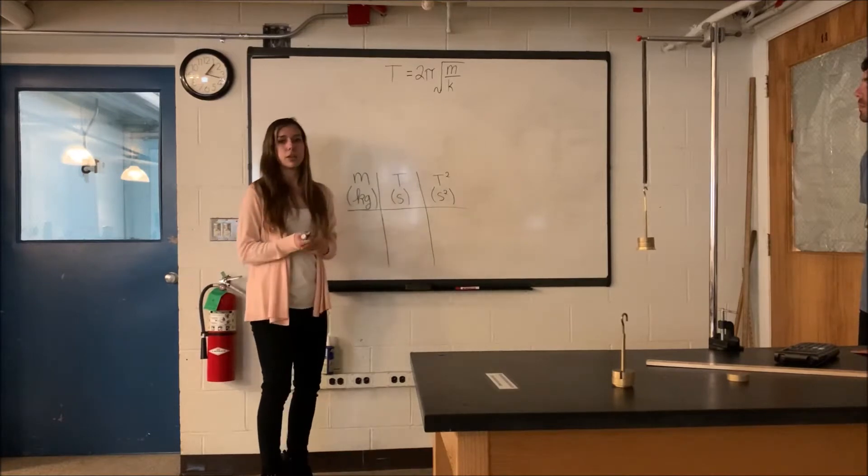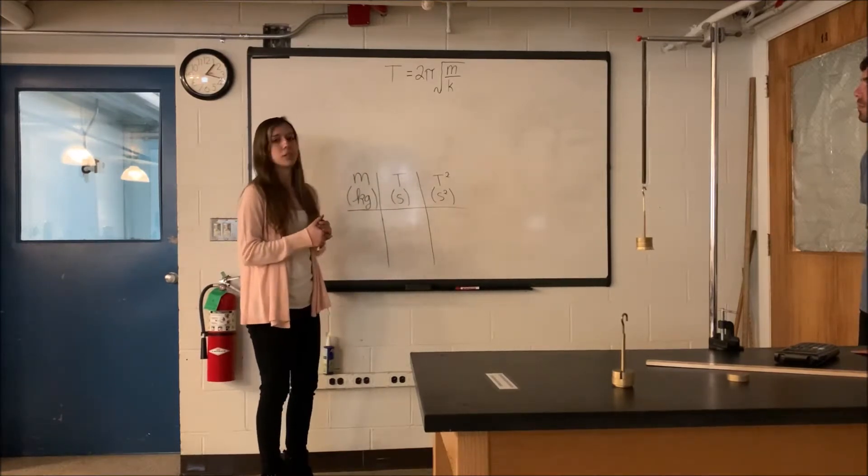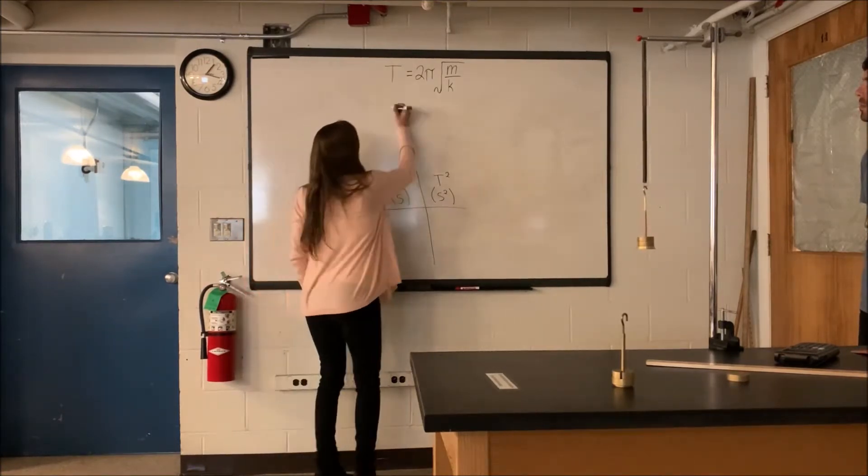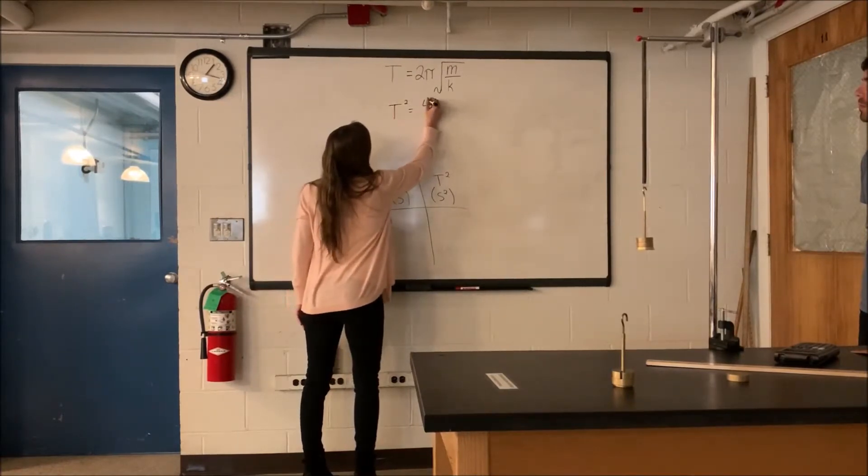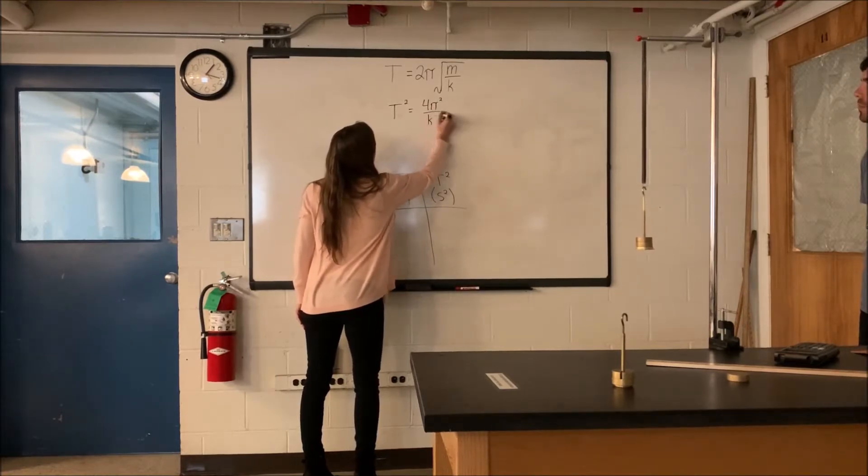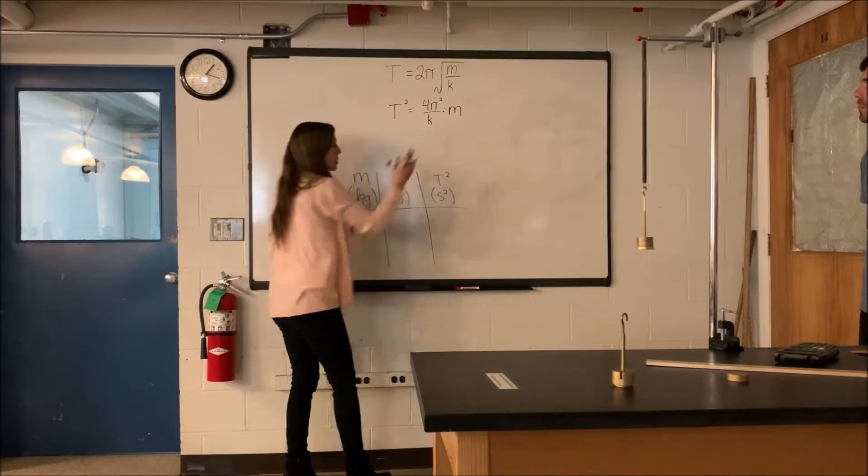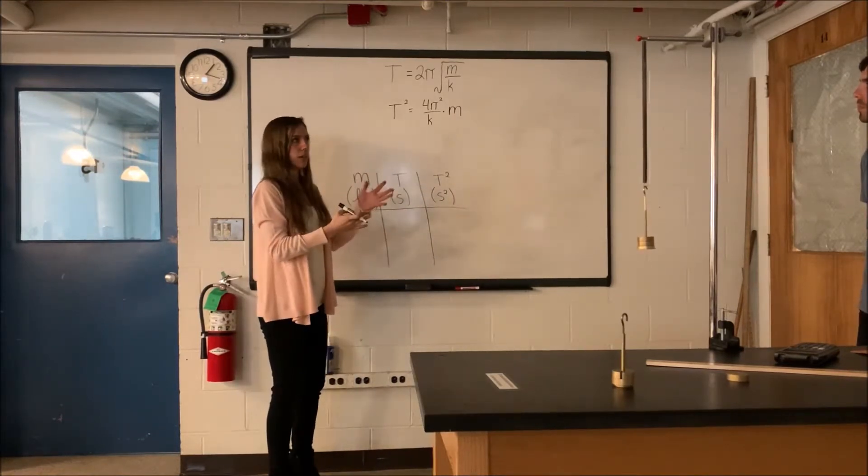I want to rewrite this equation to get rid of the square root, which means I'm going to square both sides. That gives us T² equals 4π² divided by k times m. I'm going to write it this way because we're going to use this form of the equation later on.